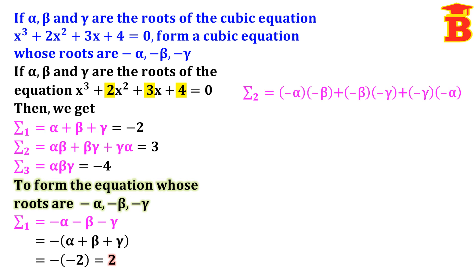Next, new sigma 2 equals the sum of two-two products: (minus alpha)(minus beta) plus (minus beta)(minus gamma) plus (minus gamma)(minus alpha). Each product of two negatives gives a positive, so we get alpha beta plus beta gamma plus gamma alpha. Substituting the value 3, we get sigma 2 equals 3.